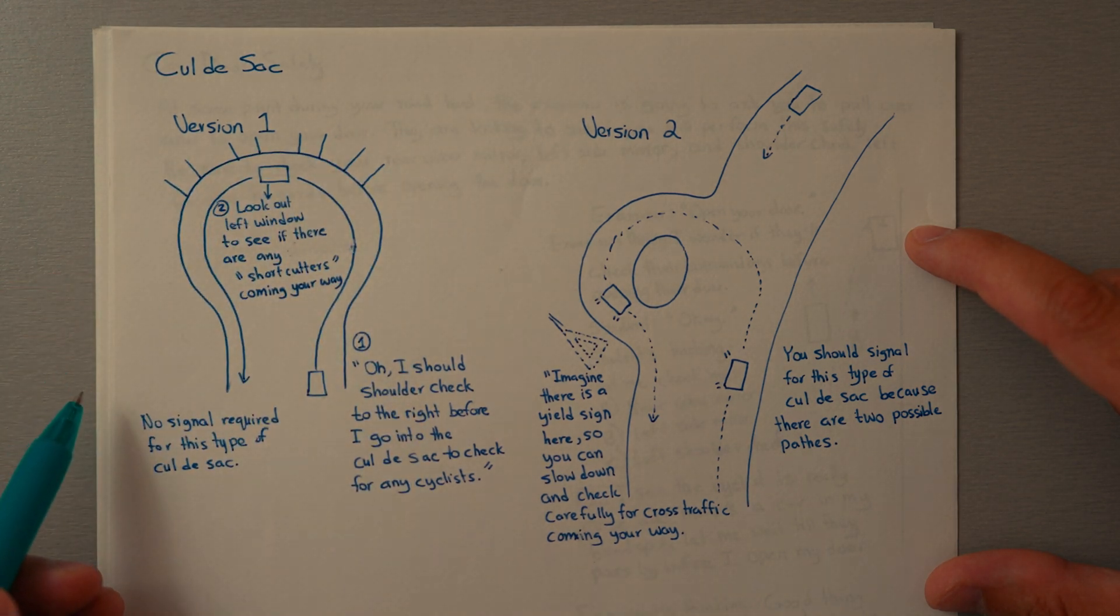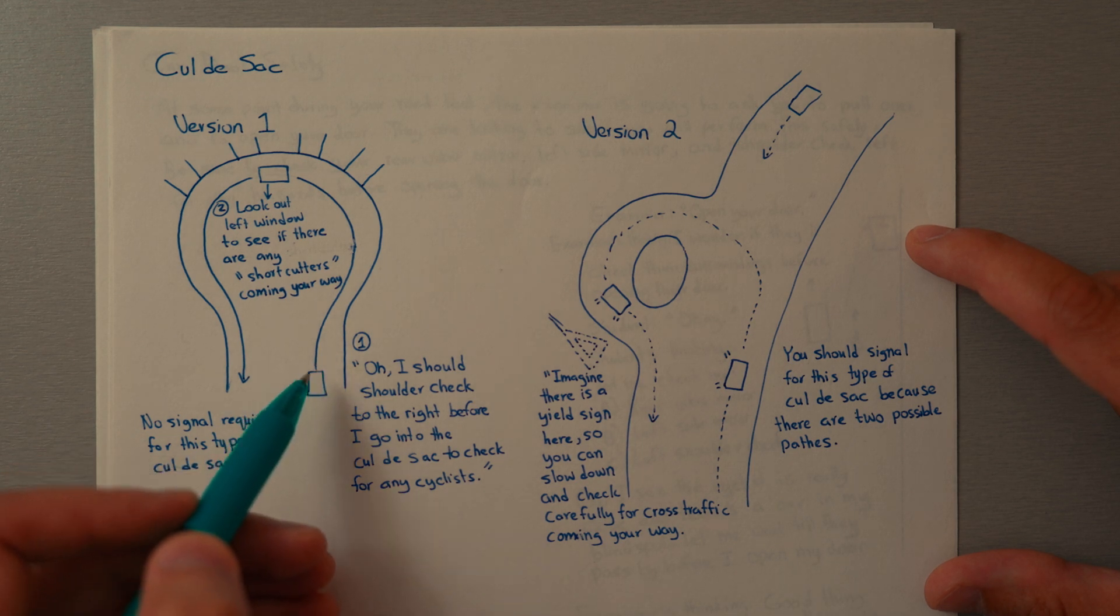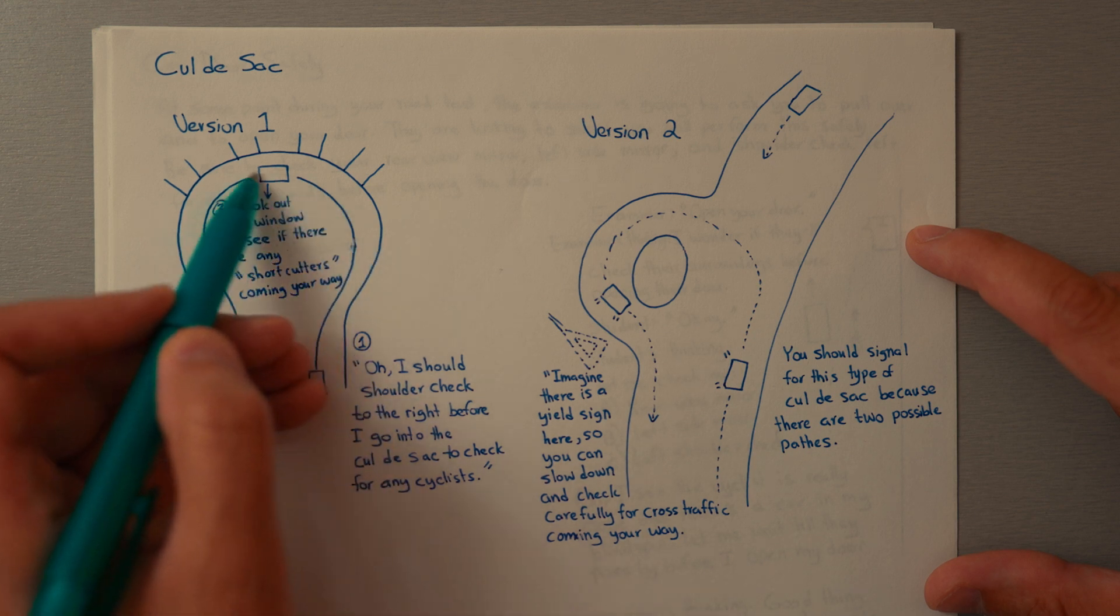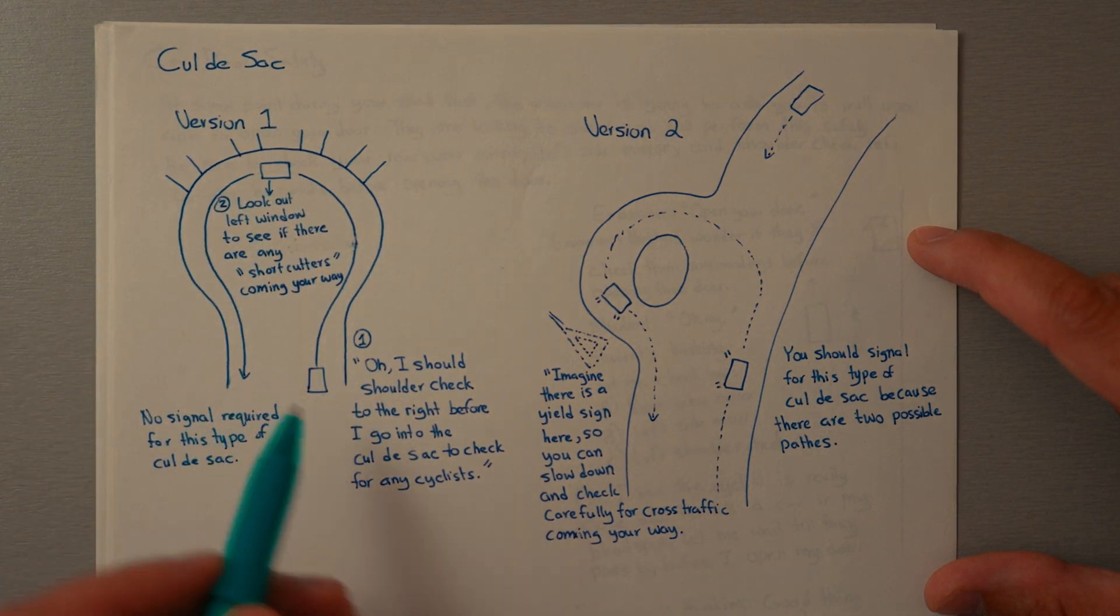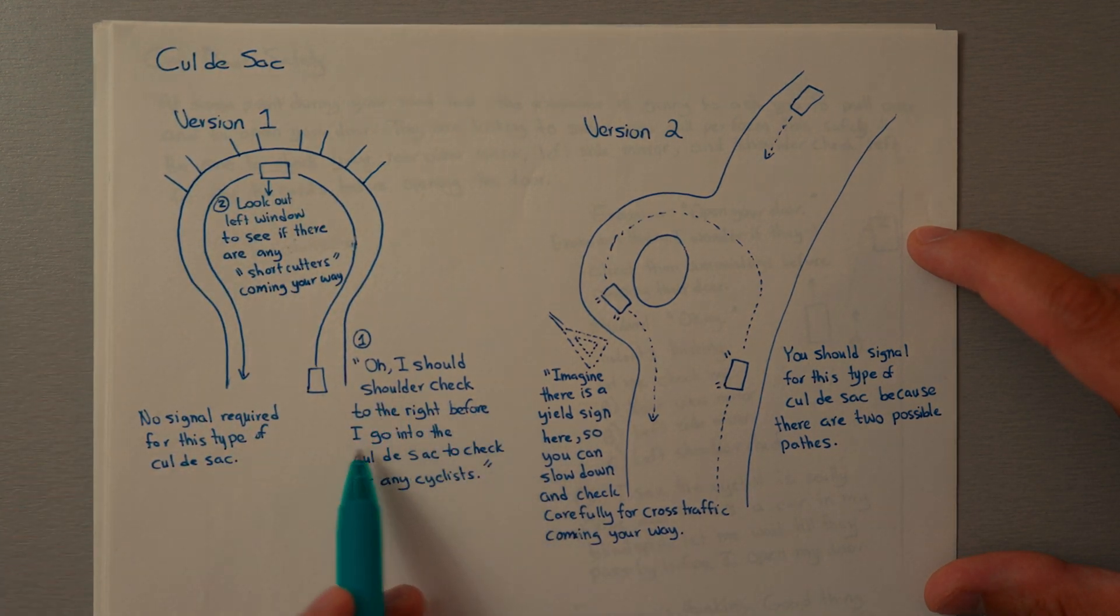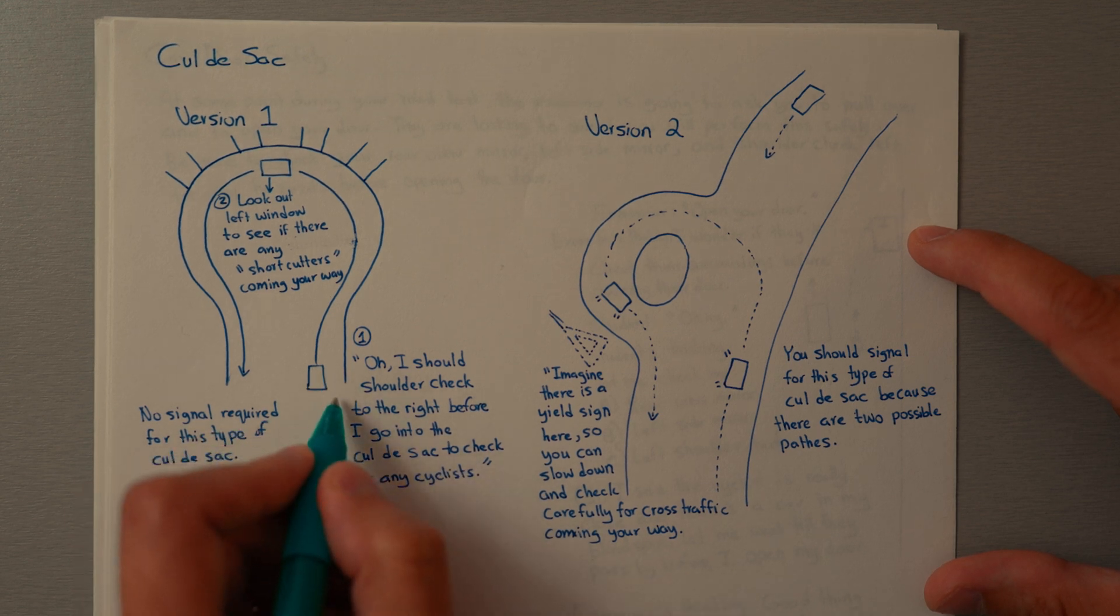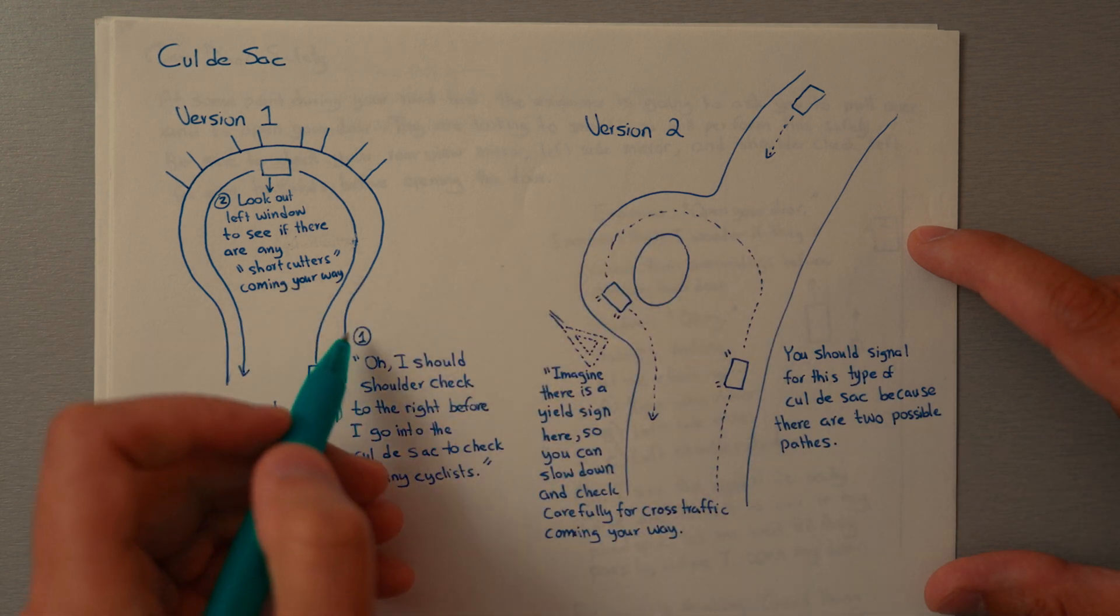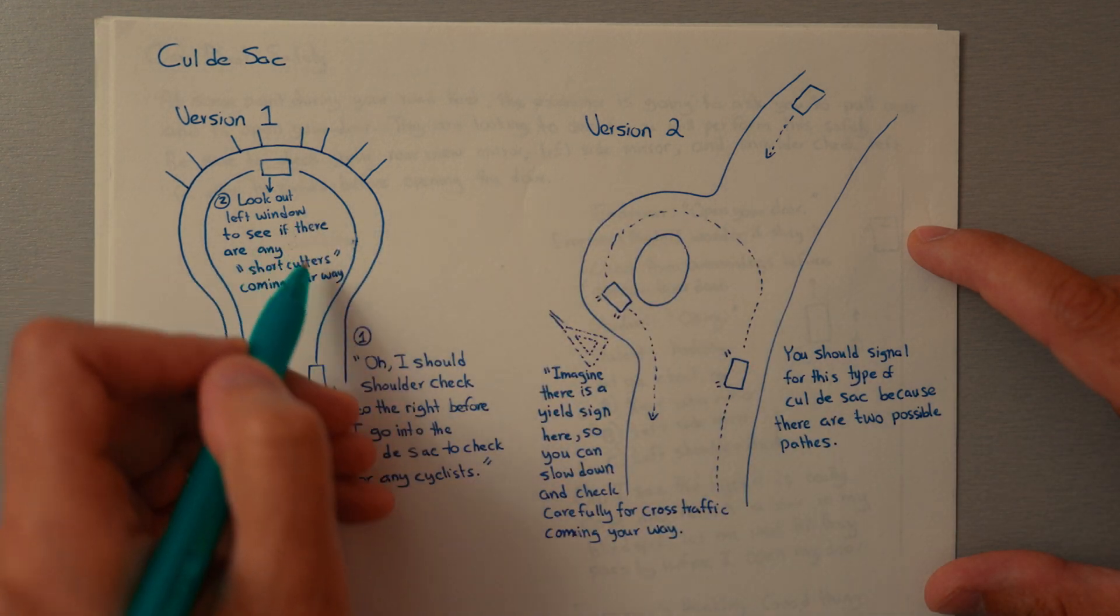You should be thinking, 'I don't really need a signal because this is the continuation of my lane with a big bend in it.' But you should shoulder check to the right before you get into the cul-de-sac to see if there are any cyclists. There might be a cyclist riding alongside your vehicle, and because you're going to be steering over to the right a bit, you want to make sure it's clear.